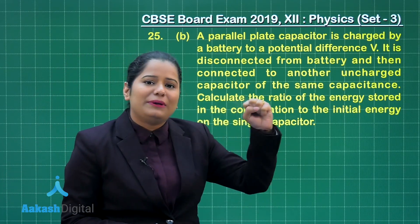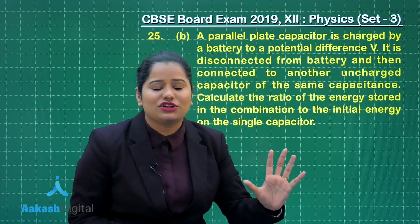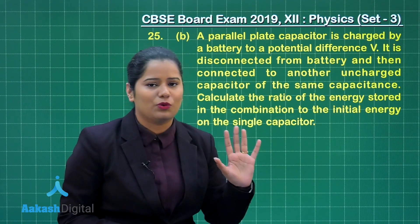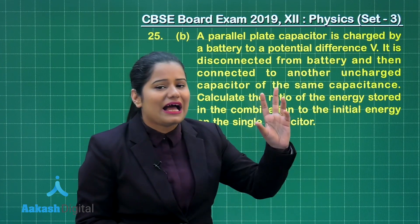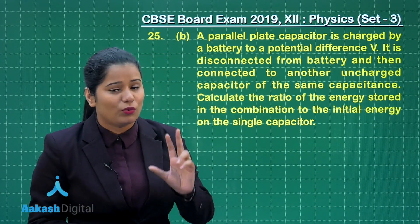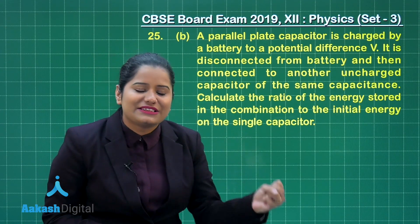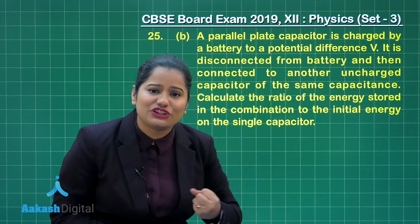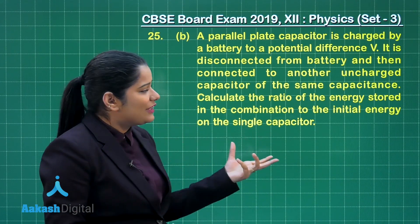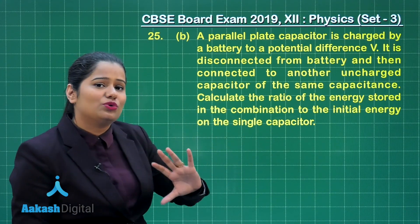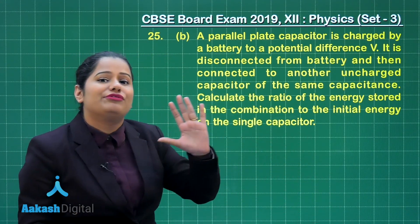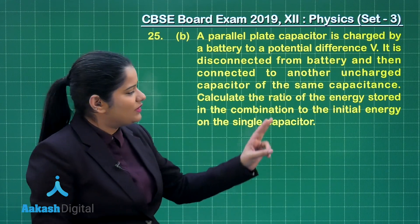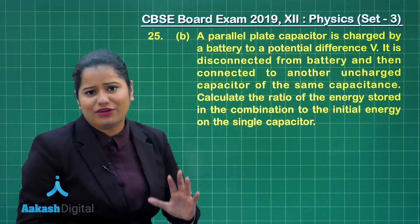When we have a capacitor and charge it to some voltage, it stores some energy. When you disconnect it from the battery and connect it to another capacitor, there is going to be redistribution of charges and hence redistribution of energy also. When you calculate the final energy or the energy stored by the combination, that will be different from the energy stored by the single initial capacitor. We need to find the ratio of these two. Let us look at the solution.